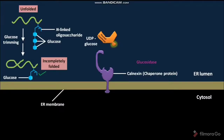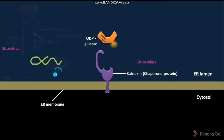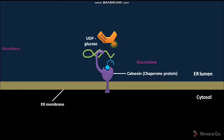This glucose trimming process is catalyzed by glucosidases. The incompletely folded protein having one terminal glucose molecule in its N-linked oligosaccharide then binds to calnexin. As a result of this binding, the incompletely folded protein is trapped in the ER lumen.